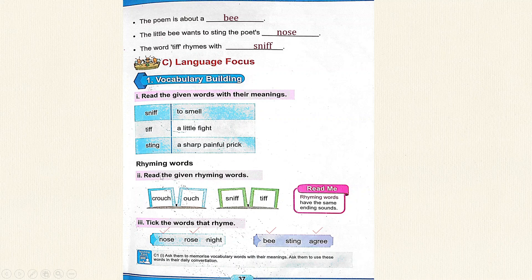Rhyming words. Read the given rhyming words. Read me: Rhyming words have the same ending sound. Crouch — Ouch. Sniff — Tiff. Tick the words that rhyme. Nose, rose, or night — the words that rhyme are nose and rose. Now: bee, sting, agree — which one is rhyming? Bee and agree are rhyming.